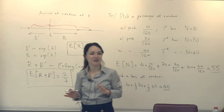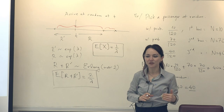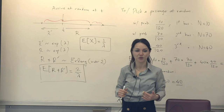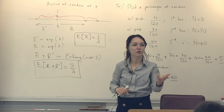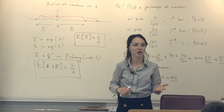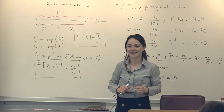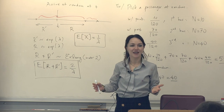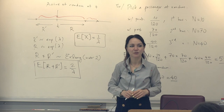Now that we understand this, we can use it in problems. The random arrival paradox is not specific to the Poisson process — it can happen in other arrival processes as well. But it won't happen with deterministic arrivals. When you have deterministic arrivals, every interval is equal anyway, so we will not have this problem.